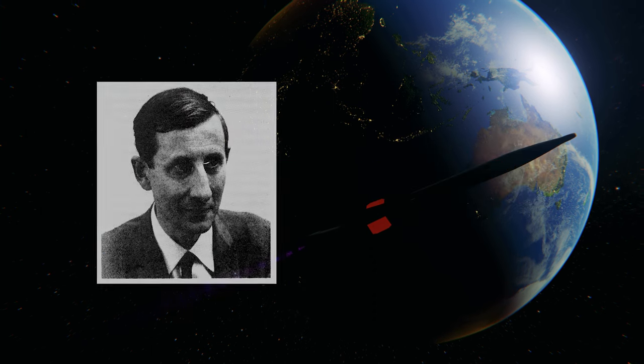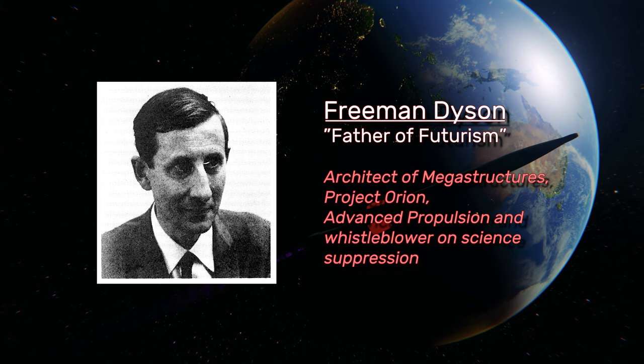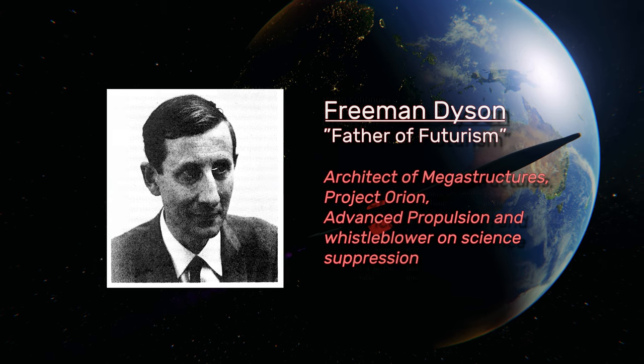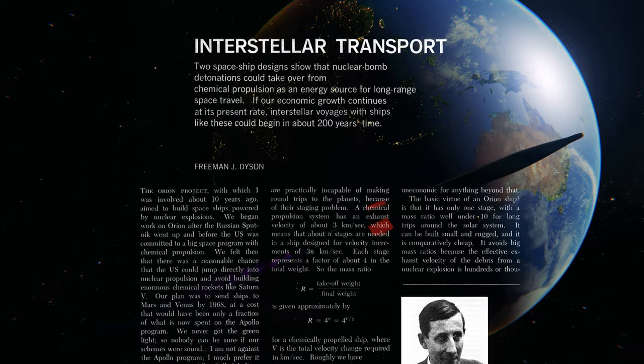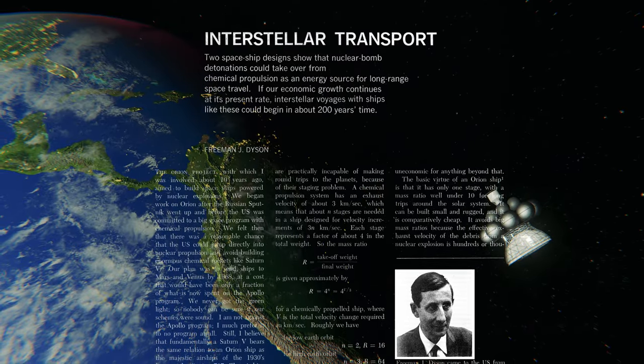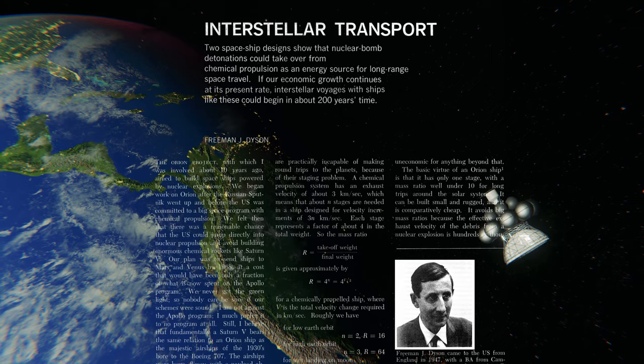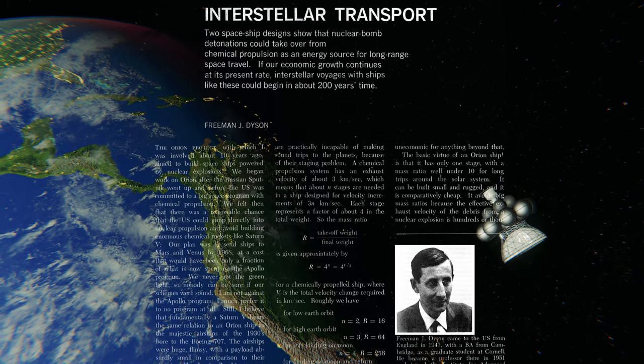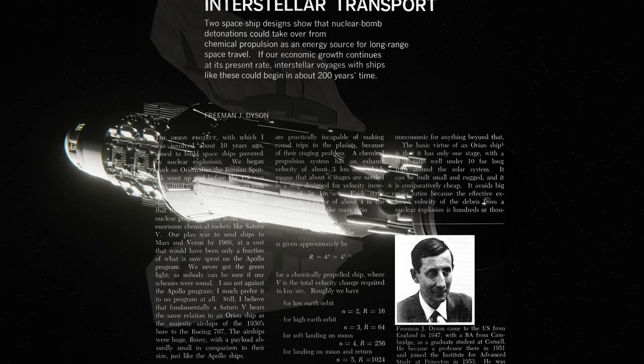In the 1968 article Interstellar Transport published in Physics Today, Freeman Dyson discusses increasing the thrust and exhaust velocity of Orion's fission propulsion by switching to deuterium-tritium fusion. If you don't know what Project Orion was, you can watch our series on the channel about it, linked below.